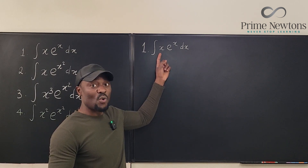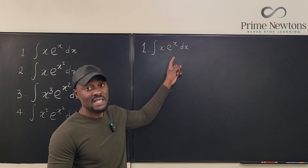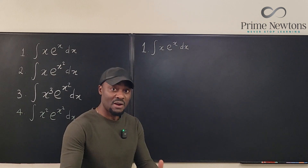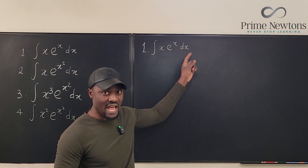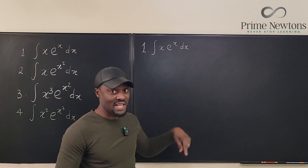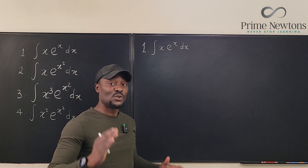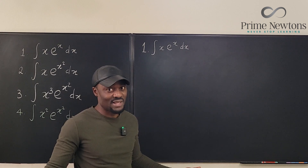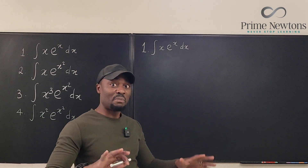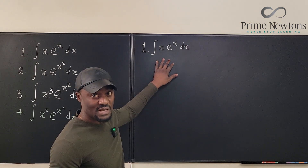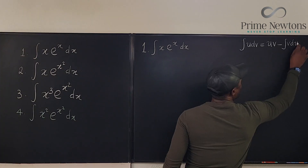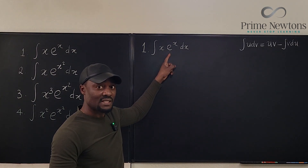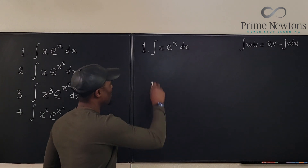It has to be integration by parts. You take one function as what you want to differentiate and the other as what you want to integrate. My recommendation: anytime you see eˣ in a product to be integrated, always choose to integrate eˣ, because it's the easiest — its integral is just itself. Let's write the integration by parts formula and apply it.